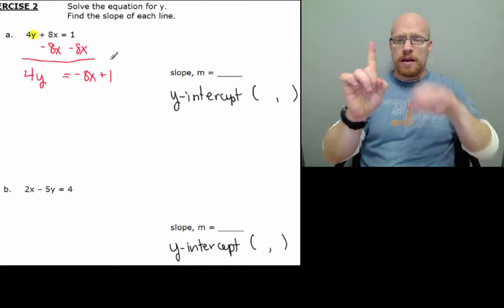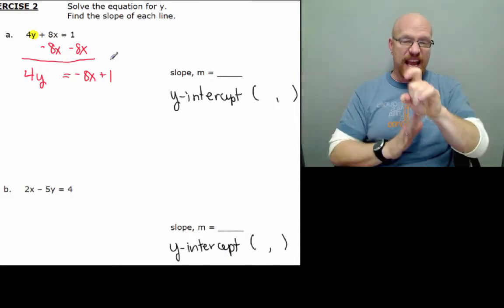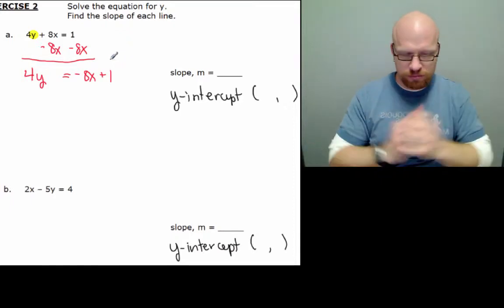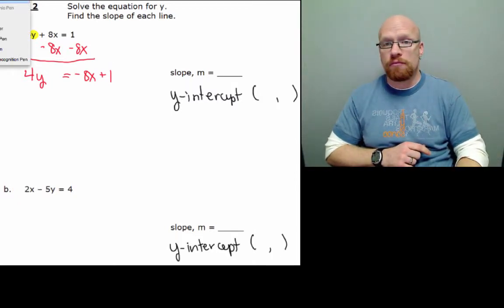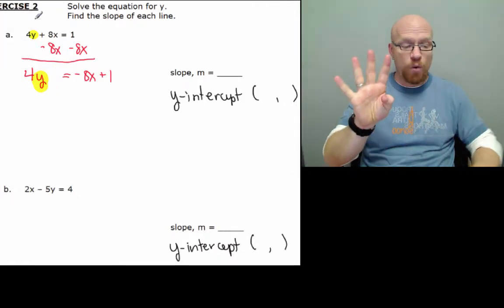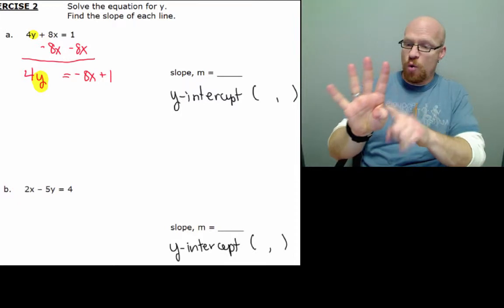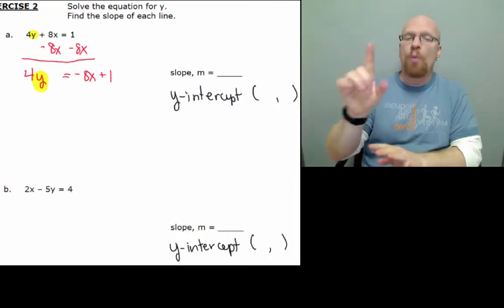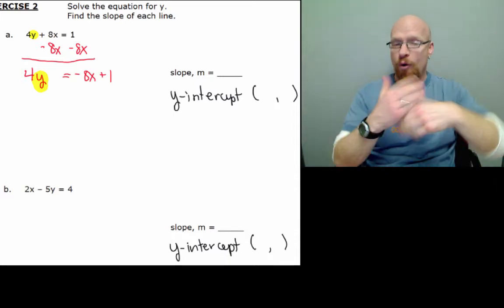Now I could have said 1 minus 8x, but we tend to have the x term before the constant, so I put the negative 8x plus 1. We wouldn't change the answer. Now we still have y still not alone. 4y, that 4 is times y. If I want the coefficient to become 1, 4 divided by 4 will be 1. Then I have to divide each of the other terms by 4 too to keep it all balanced.